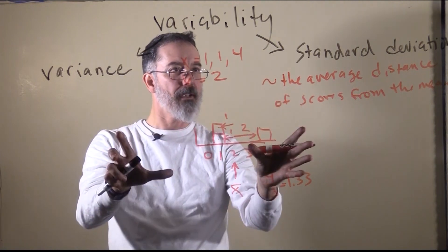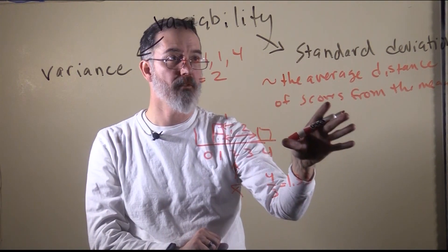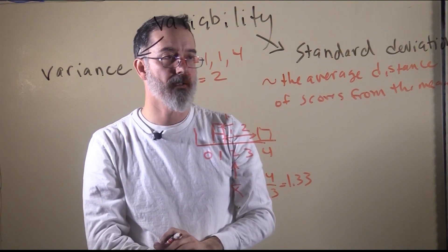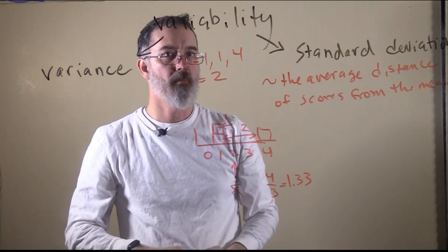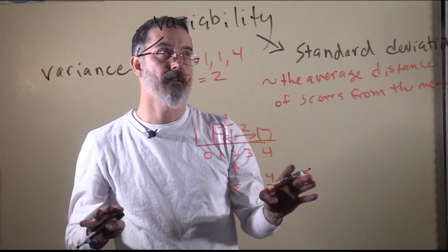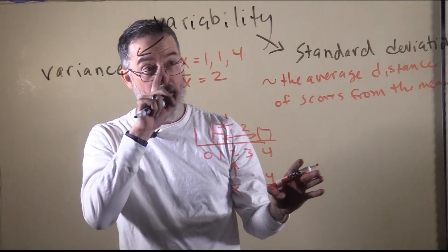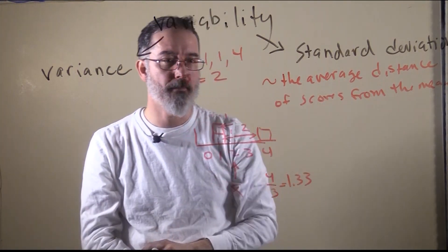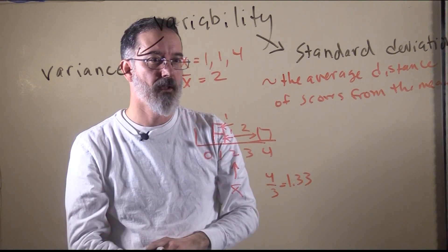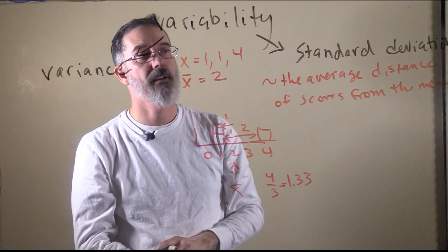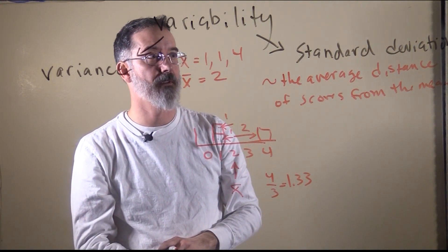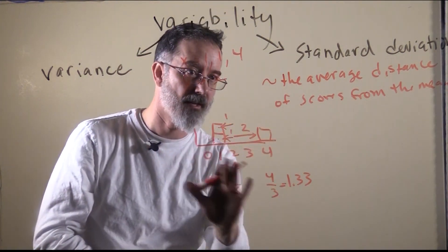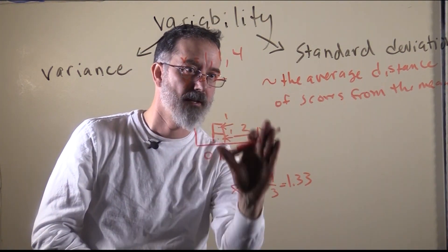That is conceptually how you want to think of a standard deviation, although as you will find out in a little bit, that is not actually what it is. But whenever you see a standard deviation in a research article, this is really how you want to think of it, because this is something you can wrap your head around. What they actually are is something very non-intuitive, and I would just try to think about it as the average distance from the mean.